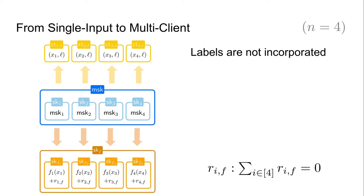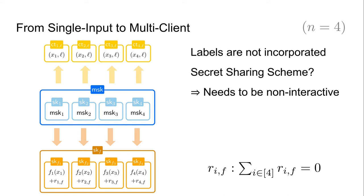A related problem occurs for the generation of ciphertexts. In the current construction, the encryption labels do not affect decryption in any way, which means it is still possible to decrypt ciphertexts generated under different encryption labels. One might think we can solve this with another secret sharing of zero, but the issue is that the different clients need to agree on the secret sharing whenever they encrypt a ciphertext under a new label, and there is no single party that can sample this sharing. Therefore, we need a non-interactive solution so that parties can agree on a new secret sharing of zero for every label on the fly.